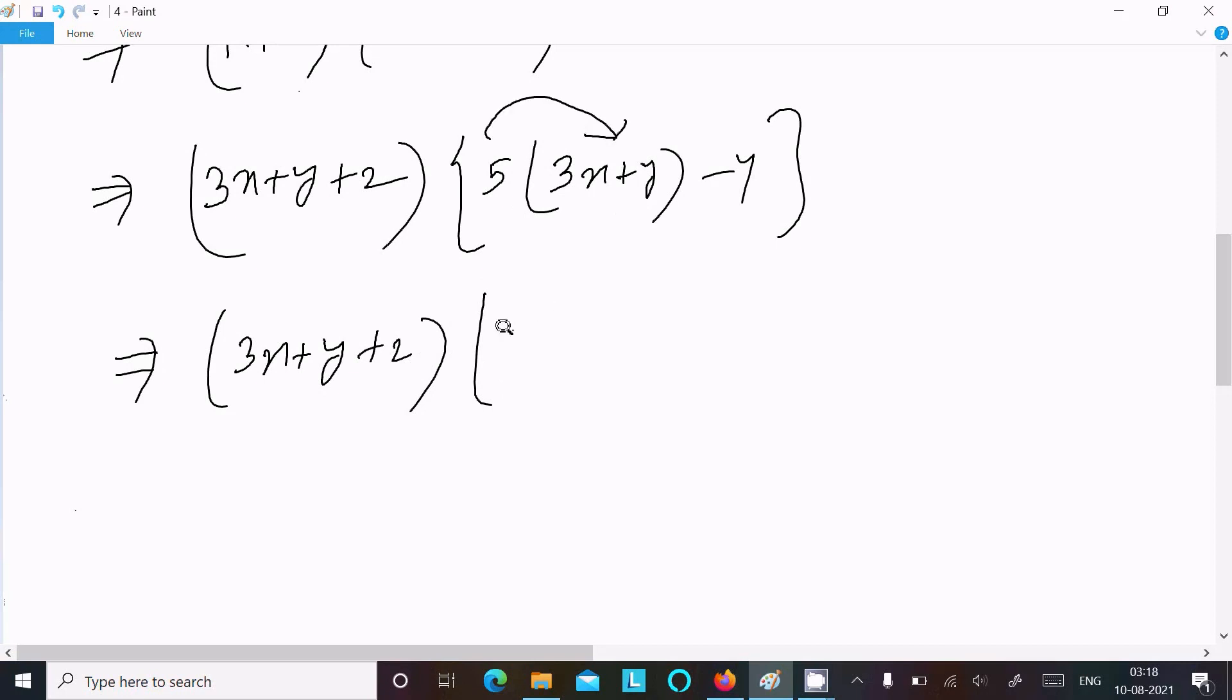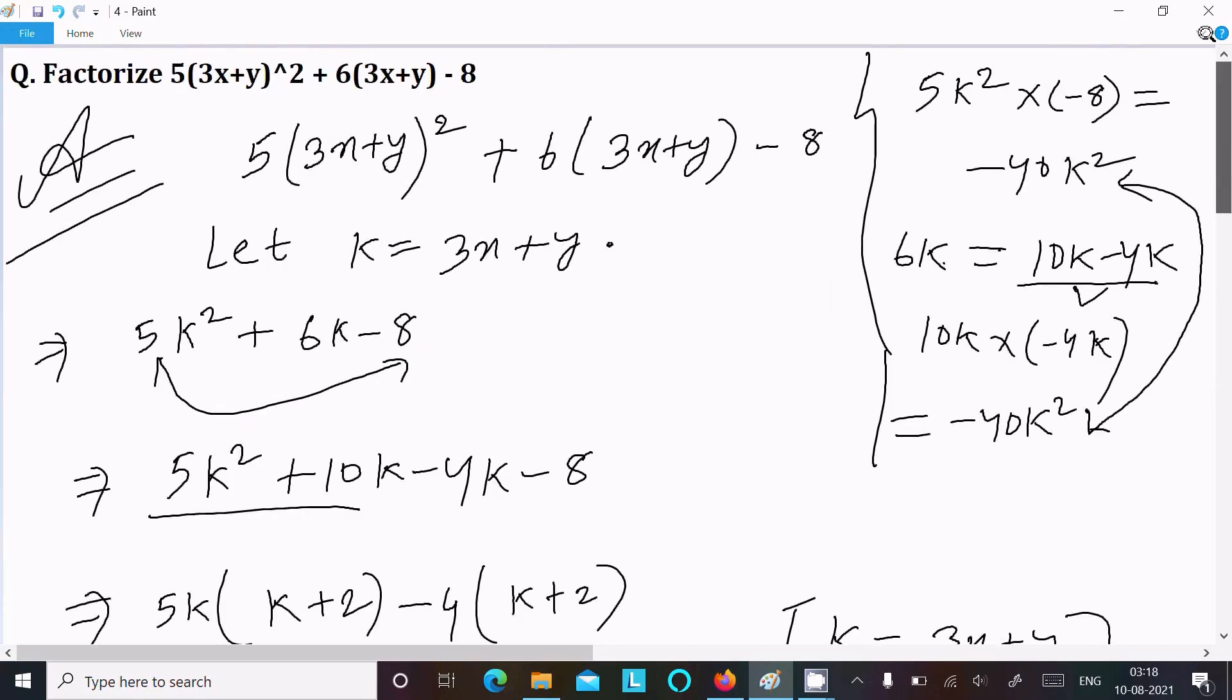Now one more line: (3x+y+2) and this multiplied by 5 to these two, so this here (15x + 5y - 4).